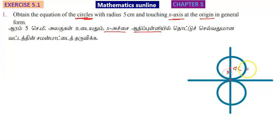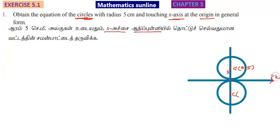The radius is 5 cm and the center point is (0, 5). That is the radius — 5 cm. Now, let's look at the angle and center. The center on the x-axis goes to the x-axis; this is the x-axis. Then the y-axis — there is a curve on the y-axis.